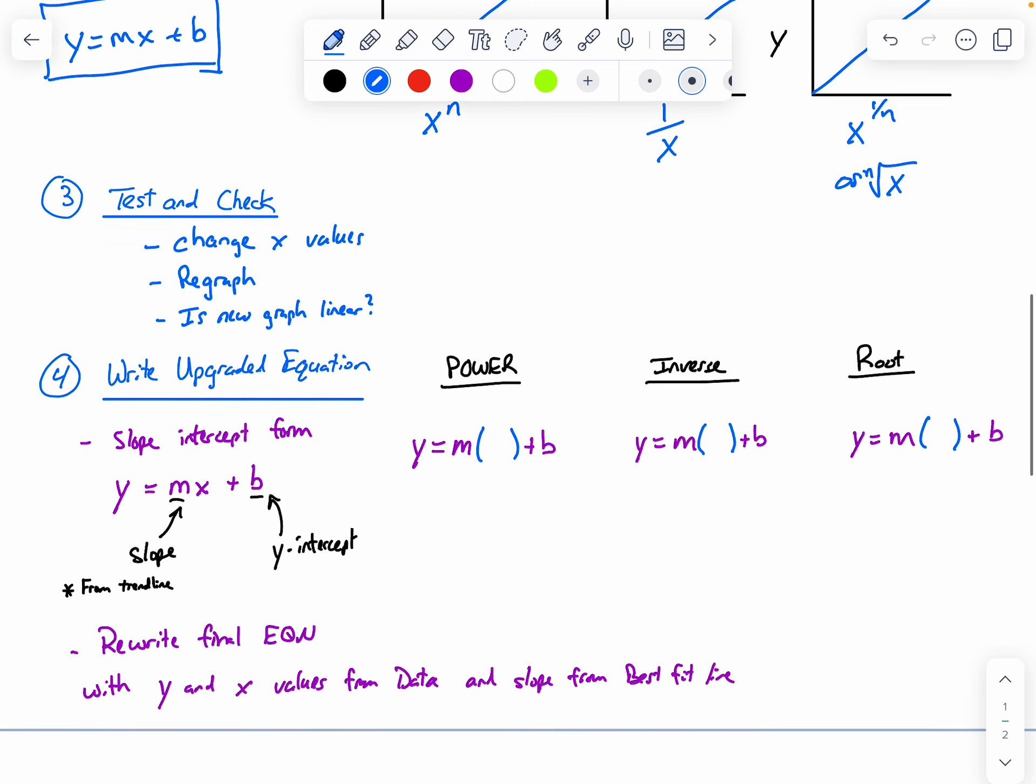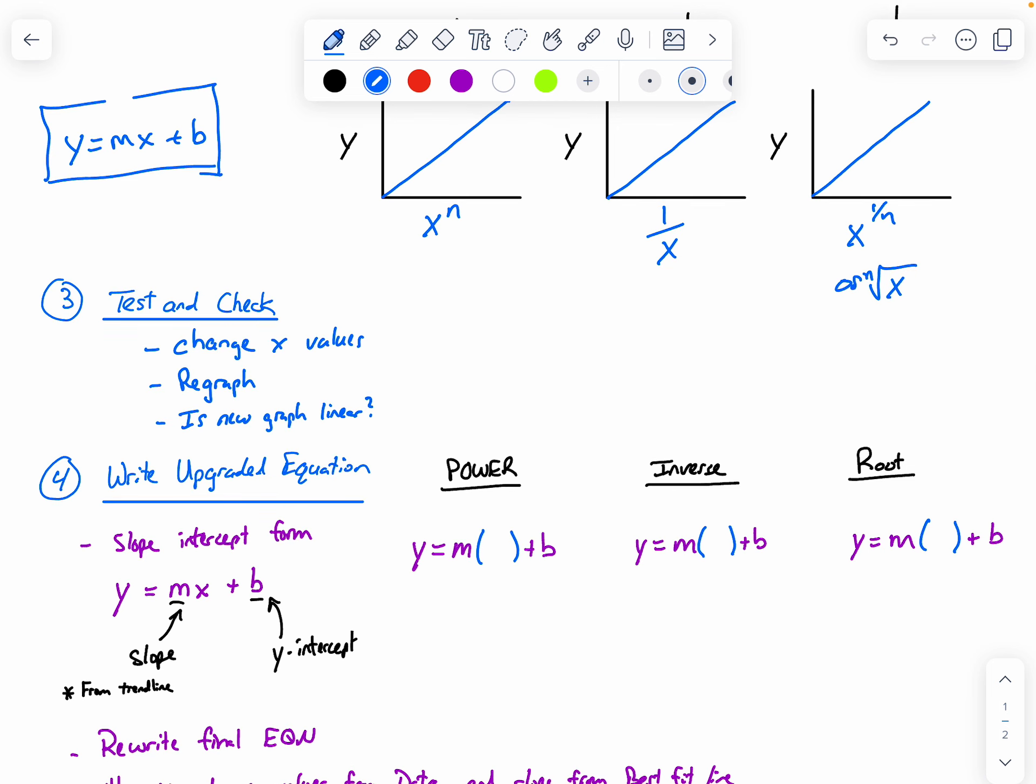That brings us to step four. We want to write our upgraded equation in slope-intercept form, where y is equal to m, m is the slope, we can get that from the trend line, times the x relationship that you used to get the linear fit, plus the y-intercept, b.